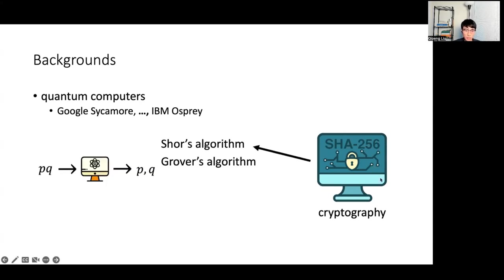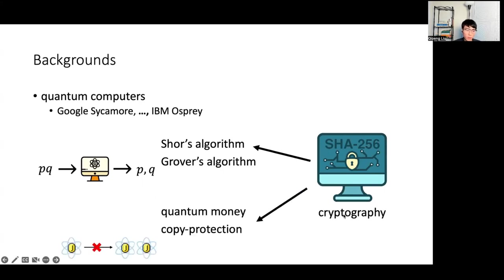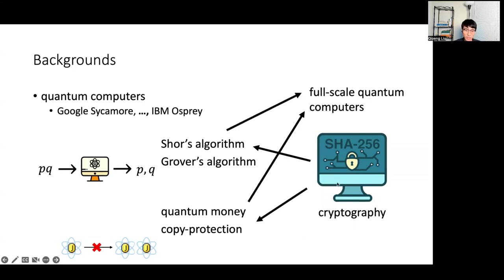On one hand, quantum computers may severely compromise the security of existing cryptographic schemes — for example, doing integer factoring in polynomial time — which are real threats for many modern cryptosystems. On the other hand, the fascinating power of quantum information also offers a lot of opportunity to achieve new and exciting functionalities, like quantum money and quantum copy protection. But despite giving lots of groundbreaking applications, all these applications require both noise-tolerant quantum computers and long coherence time, and even with the most advanced quantum technology today, they are still quite limited and far from demonstrating any of these examples.